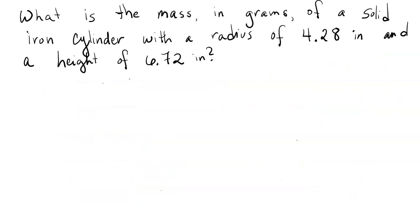The formula that we're going to use for volume is V equals pi r squared h. Pi, of course, is the constant that we use in all circles. Our radius is that 4.28 inches. We're going to square that and then multiply by 6.72 inches, which is the height.